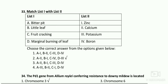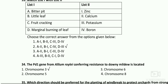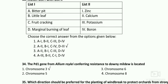Matching for nutrient deficiencies: bitter pit — calcium; little leaf — zinc; fruit cracking — boron; marginal burning of leaf — potassium. The PD1 gene from Allium roylei conferring resistance to downy mildew is located on chromosome number three. PD1 and PD2 are responsible for powdery mildew and downy mildew resistance respectively, with source Allium roylei.